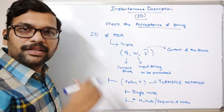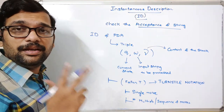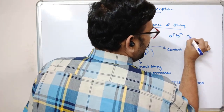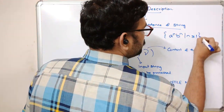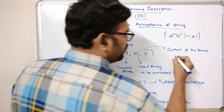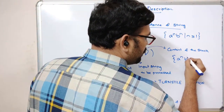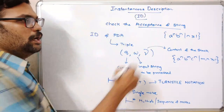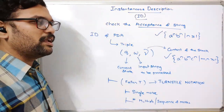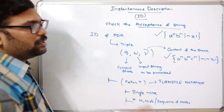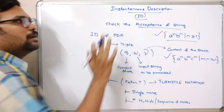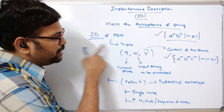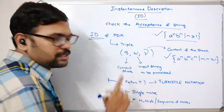We will give the ID of PDA for given examples. In previous sessions we have seen two examples: one is a^n b^n where n ≥ 1, and another is a^n b^m c^n where m, n ≥ 1. We will check whether strings of these languages are accepted by the given transition functions using the ID, represented as a triple with turnstile notation.